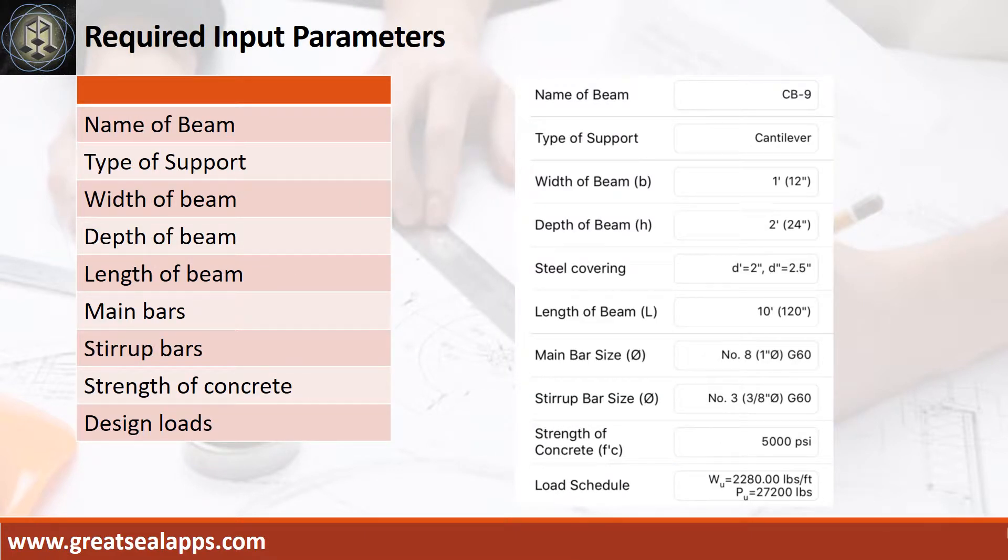Enumerate input parameters required. Name of beam, CB9. Type of support, cantilever. Width of beam, 12 inches. Depth of beam, 24 inches. Length of beam, 10 feet.